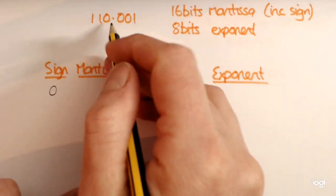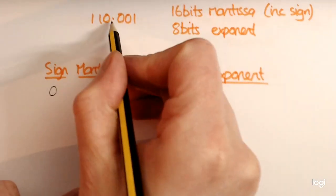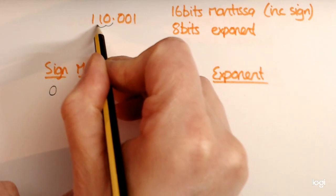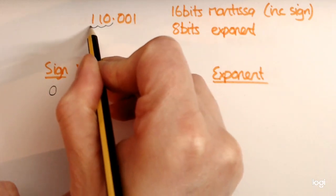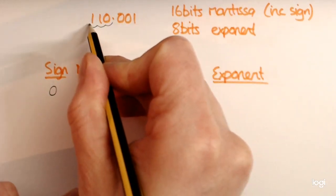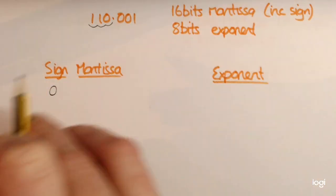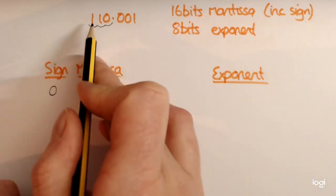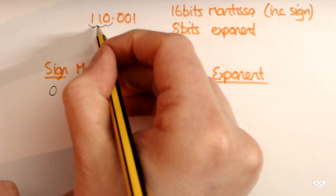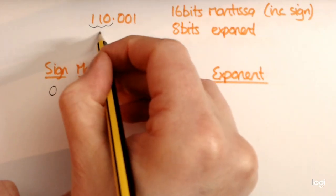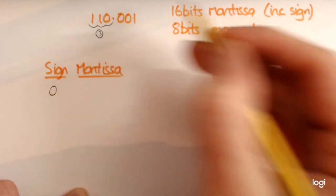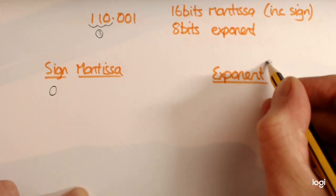Now what we need to do is move the decimal point and tuck it in front of the first 1 that you see. In reality the decimal point doesn't move, but we count how many jumps it has made — and it's actually made 3 jumps. That 3 is the exponent.